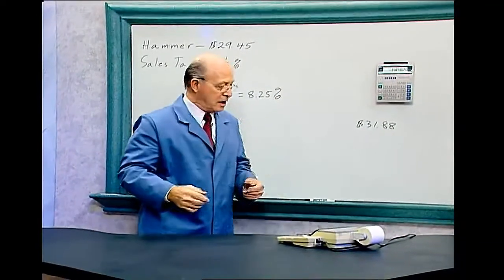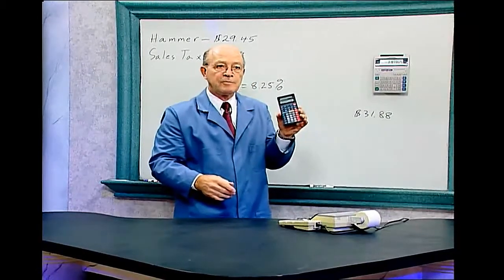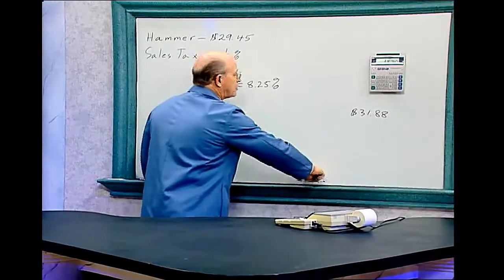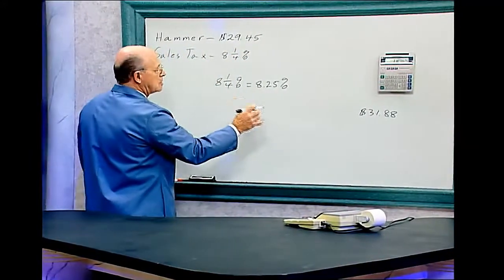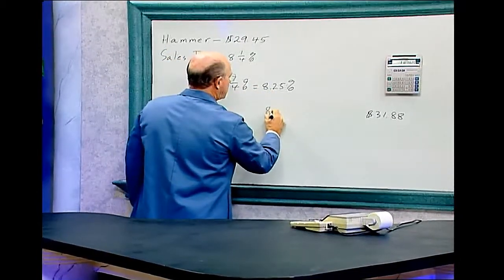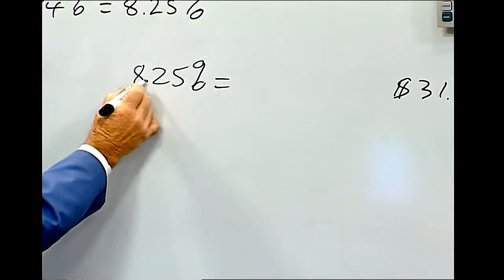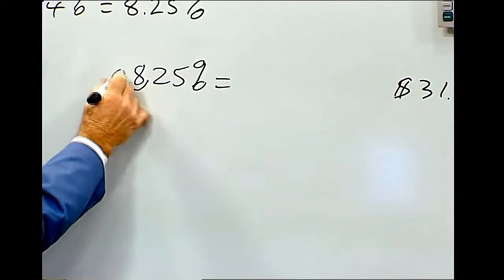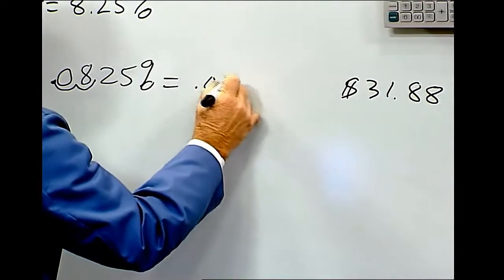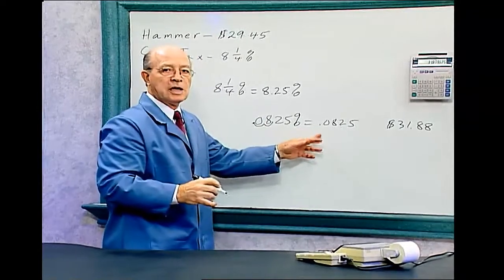Now there's another way of doing that. There's some calculators that do not have a percentage key. And so there's a fast way of doing that. And that is, convert this into a decimal. This eight point two five percent equals, and we move this over two places, one, two, and a placeholder zero. And that will equal zero point eight two five. That's what eight point two five percent equals in a decimal.